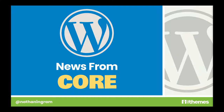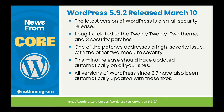Let's begin with news from Core. WordPress 5.9.2 dropped last week on March the 10th. That happened pretty quickly after 5.9.1 because it addressed a high severity issue — one bug fix and three security patches. The bug fix was minor, just related to the 2022 theme. But the patches included one high severity and two medium severity issues. They've also backported patches to all WordPress versions since 3.7. That should have happened automatically unless you've disabled the default automatic minor core update behavior, which I don't recommend changing.